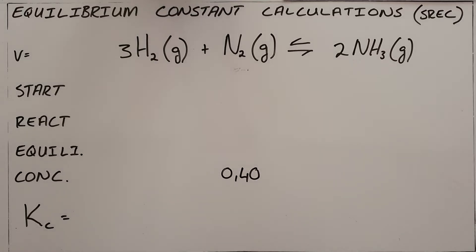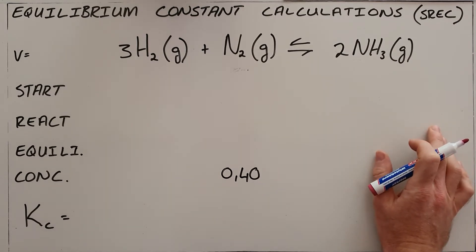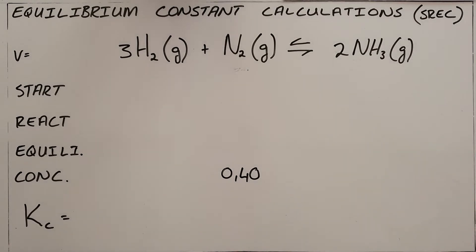A slightly more complicated example of the equilibrium constant calculation using a SRAC table would be something like what we have here. Now this question does not give you the initial volume of the container, and what that normally means is that you are allowed to decide what the volume is going to be.